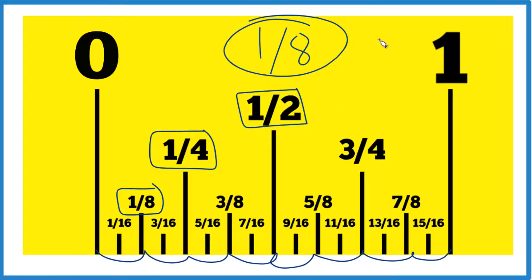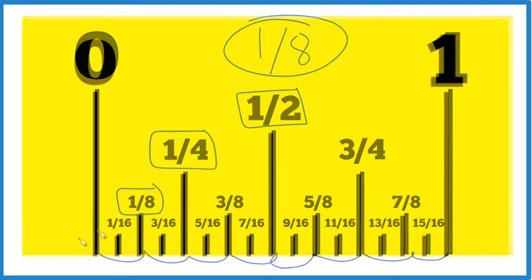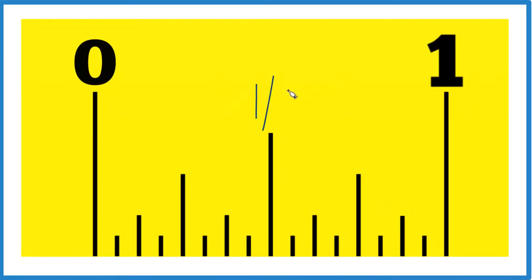So let's try this on a blank ruler so you can remember. The whole thing's equal to one. We're going to cut it in half, so right here is one half. We're going to cut that in half. That'll give us the one fourth.